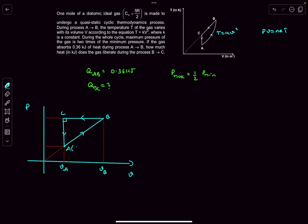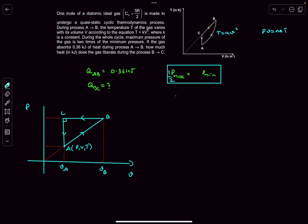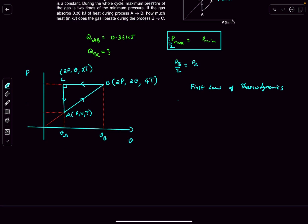Let the state at A be (P, V, T). Since P_max = P_B = 2P_min = 2P_A, the pressure at B is 2P. Since P ∝ V along A→B, when pressure doubles, volume also doubles, so V_B = 2V. With T = KV², doubling V gives T_B = 4T. For point C: pressure is constant at 2P, volume returns to V (same as A), so by T ∝ V along B→C, temperature halves to T_C = 2T.